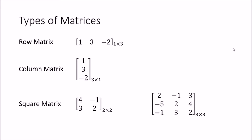The first type is a row matrix. A row matrix contains only a single row — you can see it has one row and three columns. The dimension of a matrix is written with the number of rows first and the number of columns second. So for this row matrix, the dimension is 1 by 3.